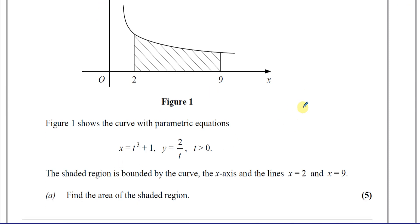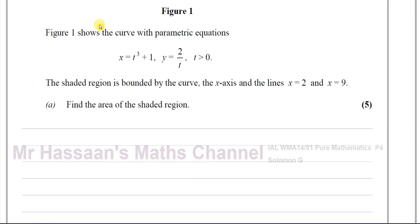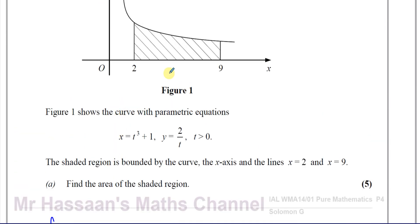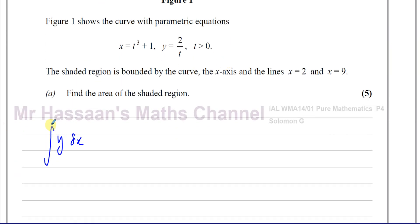Find the area of the shaded region. When we want to find the area under a curve, we need to integrate y with respect to x between the limits x equals two and x equals nine. Because we're given the equation in parametric form and not in Cartesian form, the easiest thing to do is to use the chain rule in a way to change this so that we can integrate with respect to the parameter t.